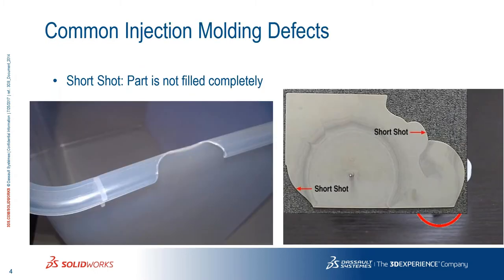Starting with common injection molding defects — the first one is the short shot. The short shot occurs when, even after increasing the pressure, increasing the temperature, or changing the material, the whole cavity is not filled to the last point and you still have empty areas that the melted polymer cannot reach. This is a big problem because these areas will not be filled completely.